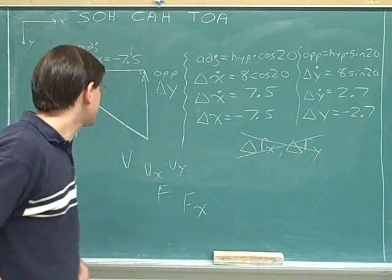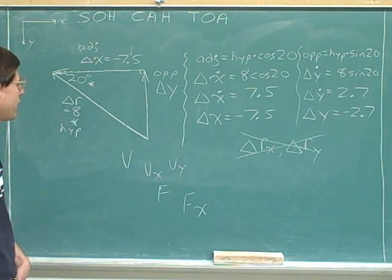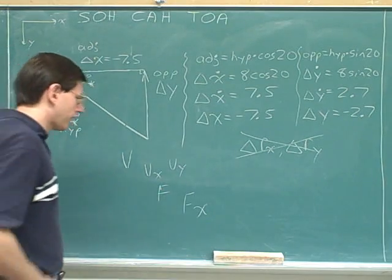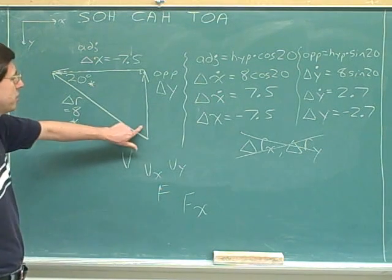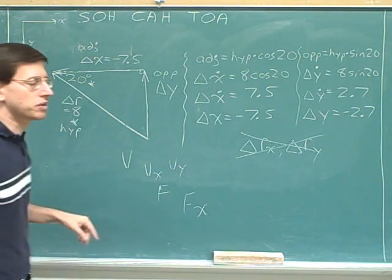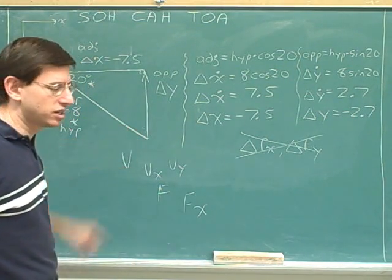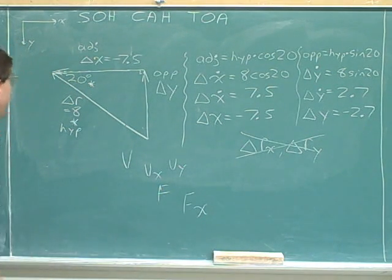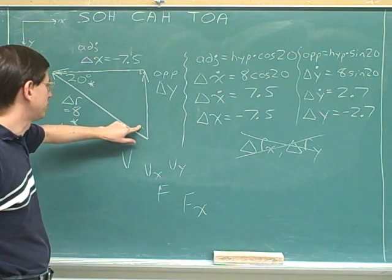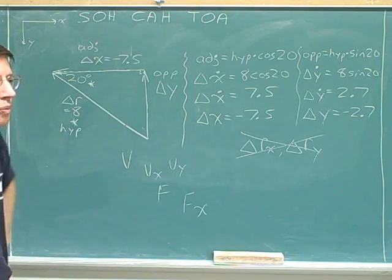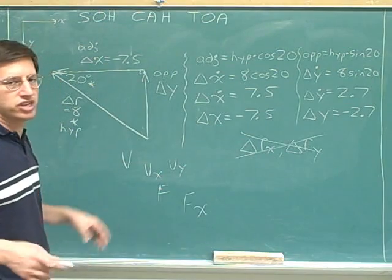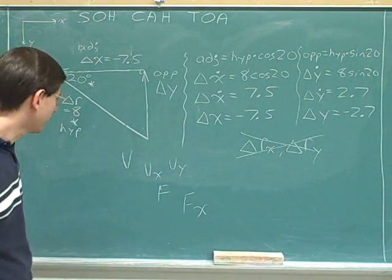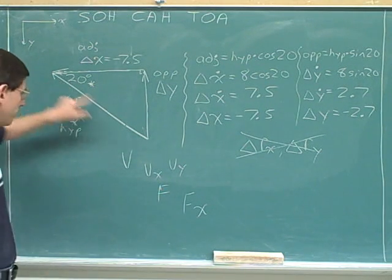One other thing to notice: normally I've almost always given you the angle at the tail of the overall vector. In this problem, I gave you the angle at the head of the overall vector instead, just for variety. What difference did that make? None. It really doesn't matter whether you're given the angle at the tail or at the head — it doesn't change the geometry much at all, and it shouldn't change your solving approach.